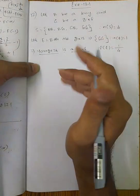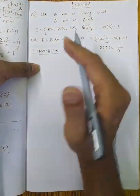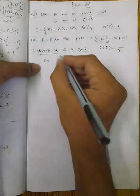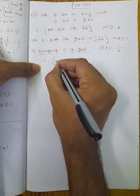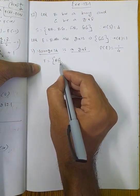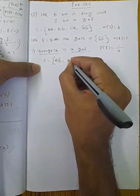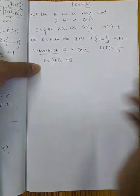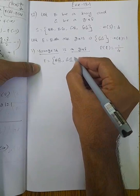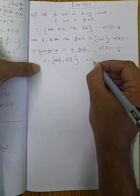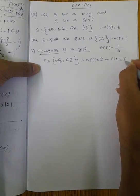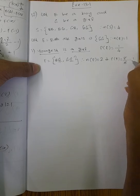The youngest is a girl means the second child is a girl. So the possibilities are: girl-girl and boy-girl. Therefore n(F) is equal to 2.